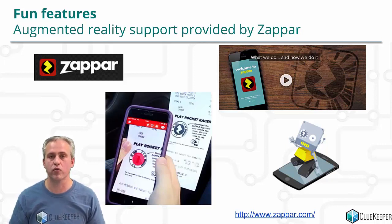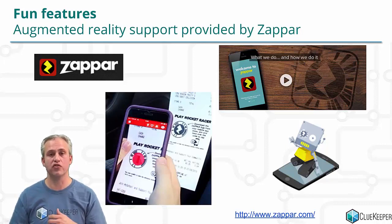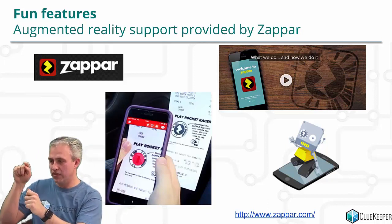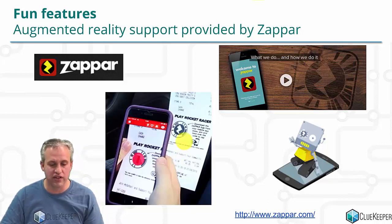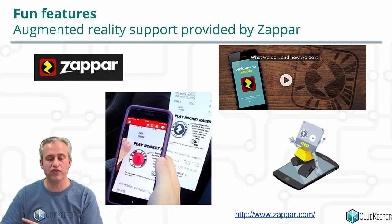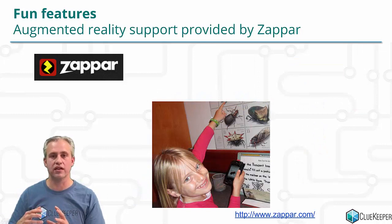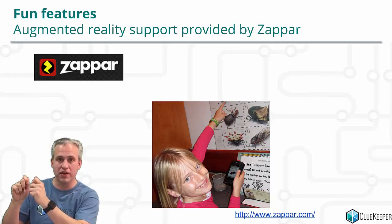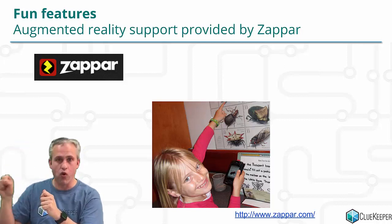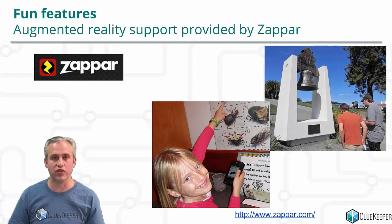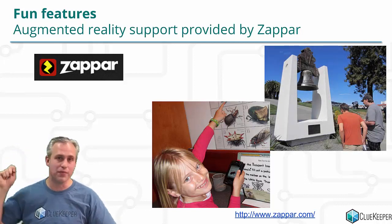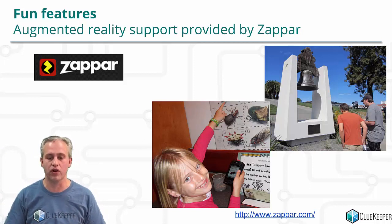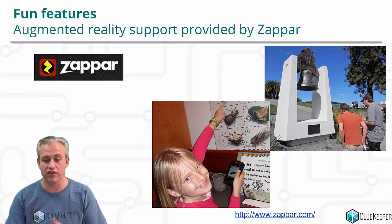We've partnered with a company called Zapper, which gives you augmented reality support. You can point your mobile device at something and see what's there, and then add things to that environment — here it's like pointing at a receipt, but there's more stuff happening on the phone. Maybe with the bug puzzle, instead of just finding the bug, when you point at the wall of stamp insects they could start moving, or with the bell there could be an overlay of a video of someone ringing it — maybe it's Morse code. There are a lot of interesting things you could do with Zapper, and that's a feature where you can really add value for your players.